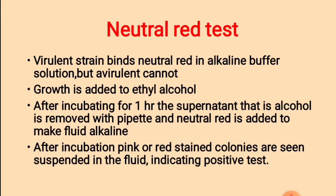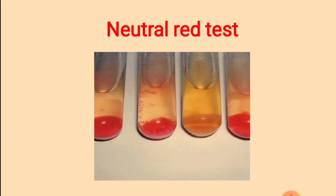Neutral red test: virulent strains bind neutral red in alkaline buffer solution, but avirulent strains cannot. When the growth is added to ideal alcohol and kept for incubation for one hour, the supernatant is collected, the alcohol is removed with a pipette, and neutral red is added to the mycobacterial fluid. If the reaction is alkaline, after incubation, pink or red-stained colonies are seen suspended in the fluid, indicating a positive test.